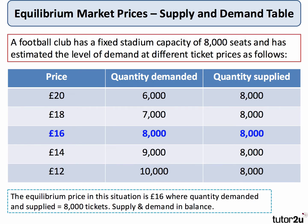Here's an example of equilibrium using a table. A football club has a fixed capacity of 8,000 seats and has estimated the demand for tickets at different prices as shown in the table. In this case the equilibrium price is £16 — the ticket price where quantity demanded equals quantity supplied.